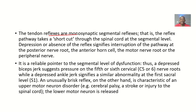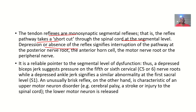These tendon reflexes are monosynaptic segmental reflexes, meaning the reflex pathway takes a shortcut through the spinal cord at a segmental level. Depression or absence of the reflex signifies an interruption of the pathway at the posterior nerve root, the anterior horn cell, the motor nerve root, or the peripheral nerve. It is a reliable pointer to the segmental level of dysfunction. For example, a depressed biceps jerk suggests pressure on the fifth or sixth cervical nerve root, while depression of the ankle jerk signifies a similar abnormality at the first sacral level.